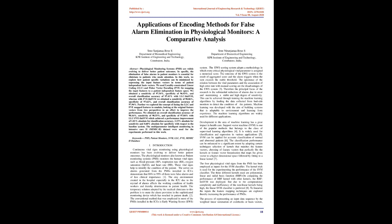The physiological monitors, also known as patient monitoring systems, PMS, monitor the human vital signs such as blood pressure, BP, respiration rate, RR, oxygen saturation, SpO2, and heart rate, HR. These vital signs help to identify the condition of the patient. The survey on alarms generated from PMSs installed in ICUs demonstrates that 88% to 99% of them were false alarms and of less clinical importance.